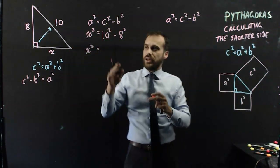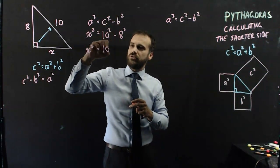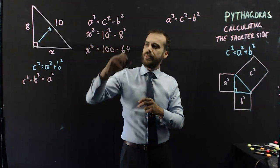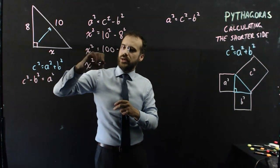And so, you can use your calculator here. 10 squared, 10 times 10 is 100, minus 8 squared, 8 times 8 is 64. And that's x squared equals 36.